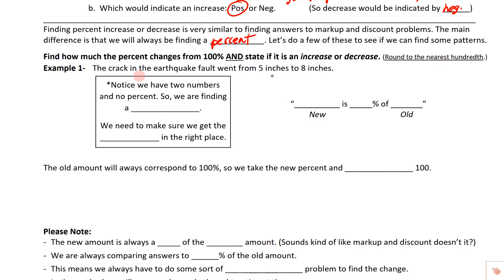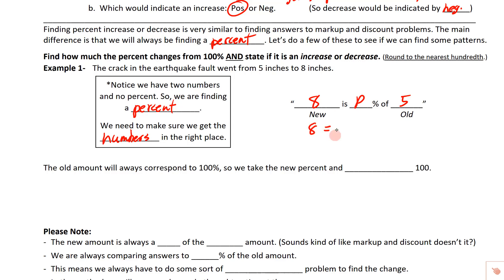The crack in the earthquake went from five inches to eight inches. Because we're finding a percent, we're going to be given two numbers and no percent — so we've got to change our answer to a percent when we're done. We want to make sure the numbers are in the right place. The new amount is a percentage of the old amount, so: eight is some percent times five.